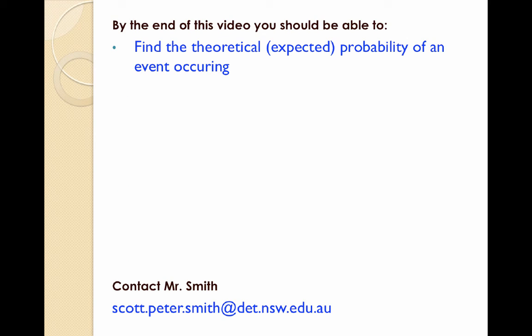And that's it. That's the general idea for theoretical probability. Hopefully now you can find a way of getting the expected probability, but we're going to look at a video next on experimental probability, where we don't always get what we think we're going to get. Good luck.